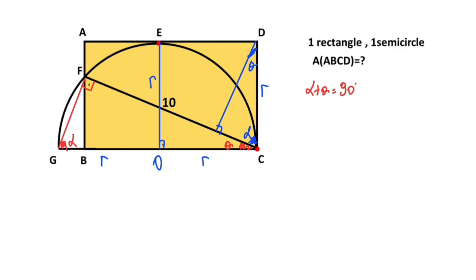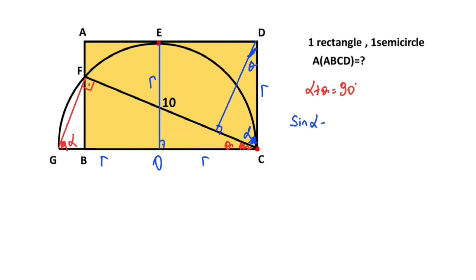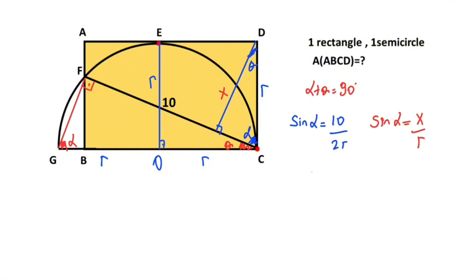Now if you focus on triangle GFC, for this triangle if you calculate sine alpha, sine alpha equals 10 over 2r. Then if you focus on this smaller triangle, let's call this side x, so sine alpha equals x over r. Therefore, if we equalize these two expressions, 10 over 2r must equal x over r. Simplifying, x equals 5 units.